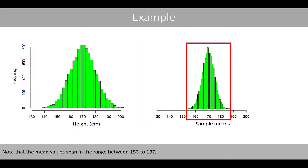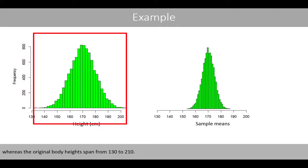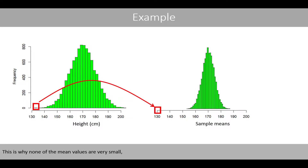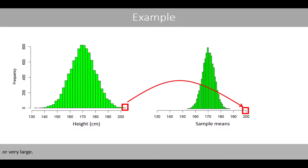Note that the mean values span in the range between 153 to 187, whereas the original body height spans from 130 to 210. Since there are fewer individuals that are very tall or short in the population, it is not very likely that we will randomly select four very tall or short individuals for our sample. This is why none of the mean values are very small or large.